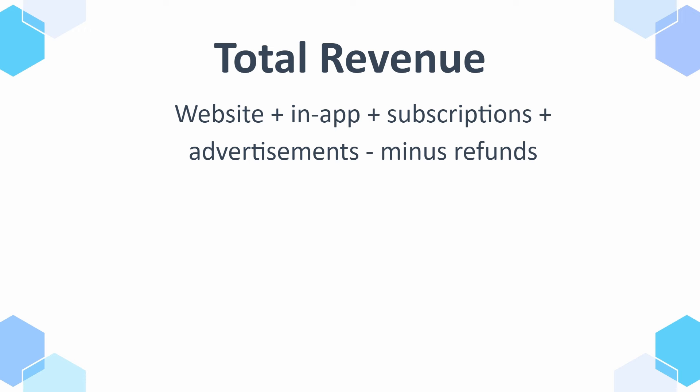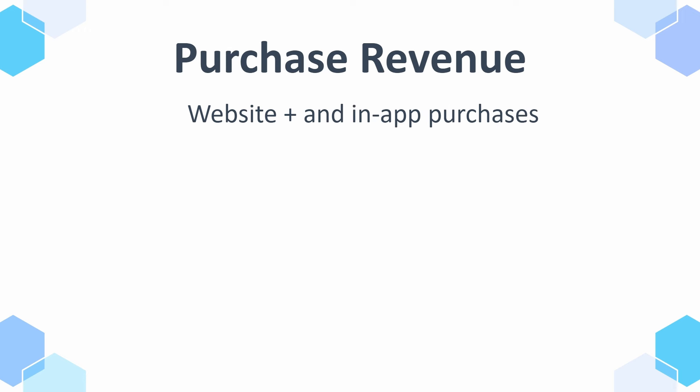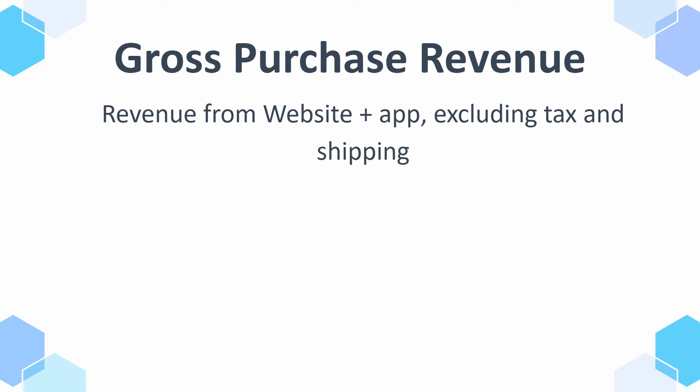Then we have purchase revenue, which sounds similar but in this case it's website plus in-app purchases only — no refunds included. Then we have gross purchase revenue, which is revenue from website plus app, excluding tax and shipping. And then there's a fourth one called item purchase revenue, which we'll get to in a second.